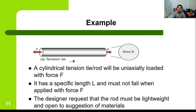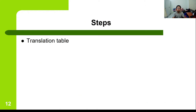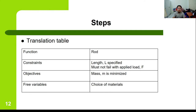This example involves a cylindrical tension rod that is axially loaded with force F, has a specified length L, and must not fail when the force F is applied. The design requests that the rod must be lightweight and open to suggestion of materials. Translating this: the function is the rod, the constraint is the length L specified and must not fail with applied load F, the objective is that its mass M must be minimized, and the free variable is the choice of materials.